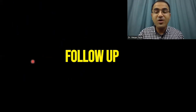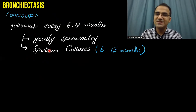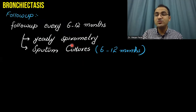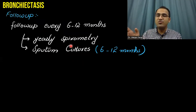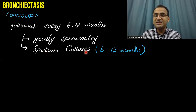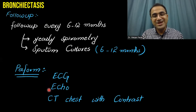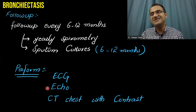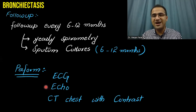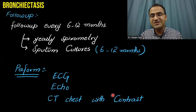Follow-up of bronchiectasis patients is done every 6 to 12 months. Yearly spirometry is performed to monitor disease progression. Sputum cultures are done every 6 to 12 months depending on the patient. ECG and echocardiogram are also performed because these patients are at increased risk of right-sided heart failure — cor pulmonale. CT chest with contrast is also performed.